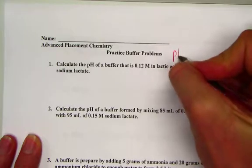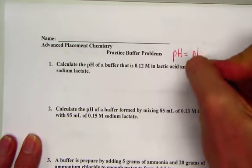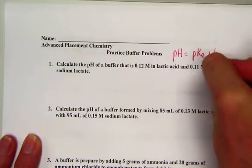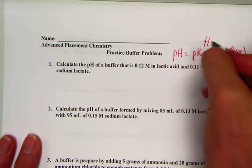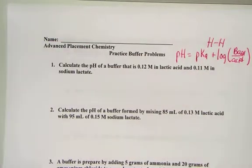The buffered solutions find a pH by knowing the pKa of our system plus the log of the ratio of the base over acid. Henderson-Hasselbalch is the equation of use to find pH of buffered solutions.